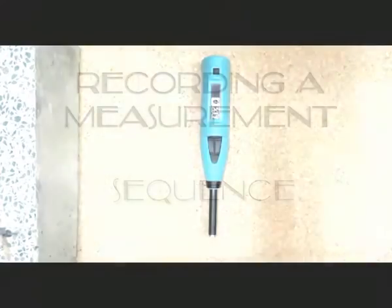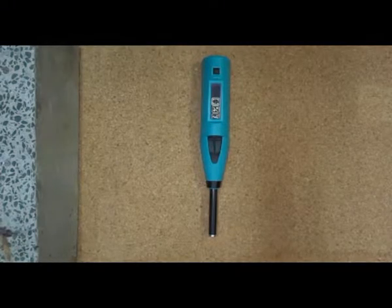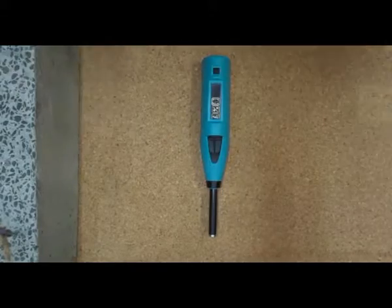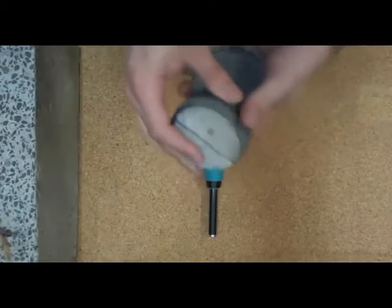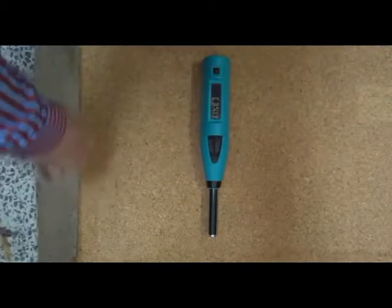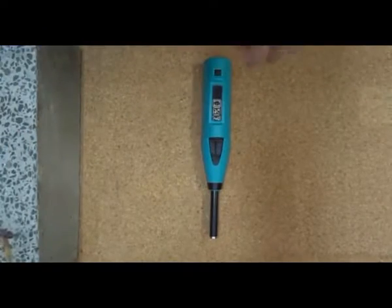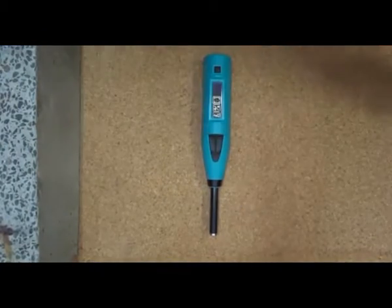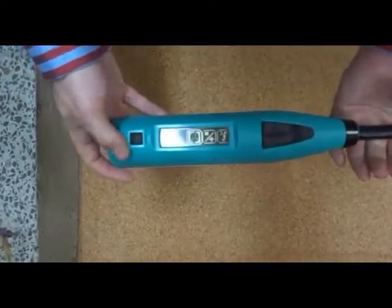During standard operation, we will record a measurement series with the Schmidt hammer. First we need to prepare the surface of the concrete for our test. This can be done using a grindstone or a grinder, and we just want to smooth the surface out and ensure we have a flat level area to test on.